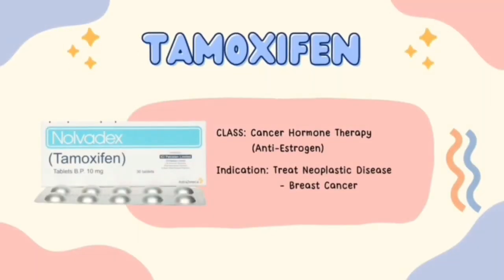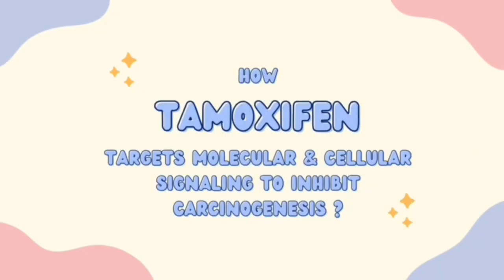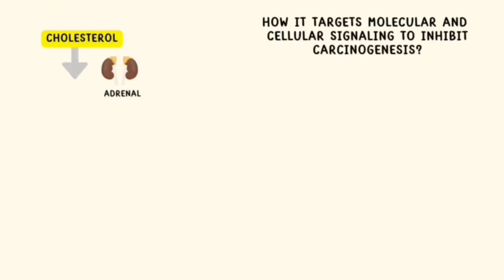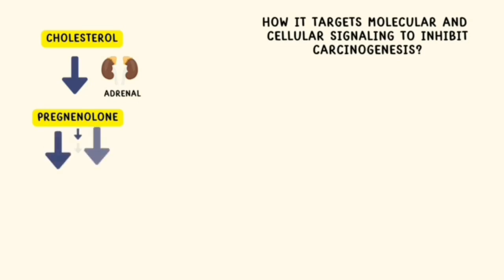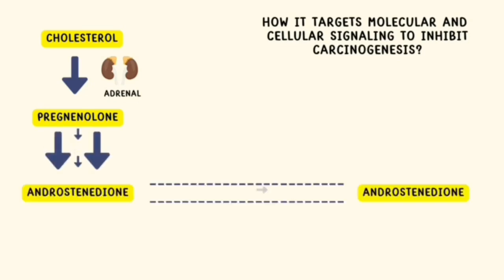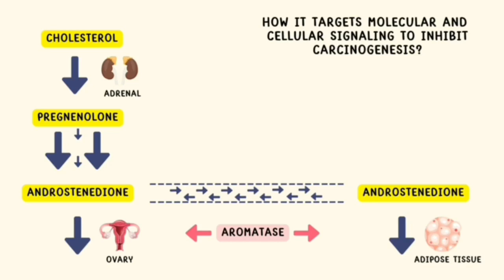Tamoxifen is a cancer hormone therapy or anti-estrogen that functions in treating neoplastic diseases. Estrogen synthesis starts with cholesterol, which is dehydroxylated to pregnenolone in the adrenal gland. Then, pregnenolone is converted into androstenedione. The latter is converted to estradiol, the most potent estrogen, by the action of the enzyme aromatase, which is found in the ovaries and adipose tissue.